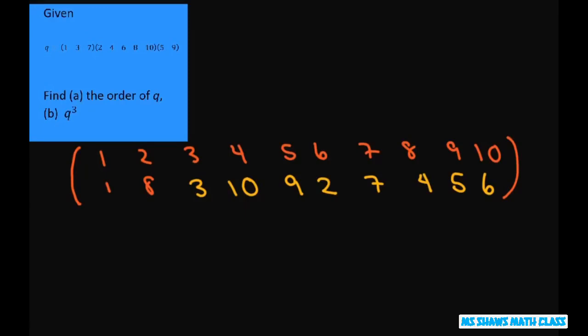So now writing in cyclic notation, we're going to write 1 goes to 1 and 1 goes to 1. So that's closed. Secondly, 2 goes to 8, 8 goes to 4.